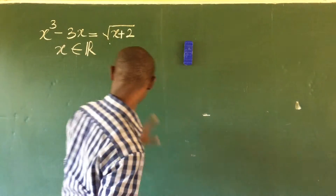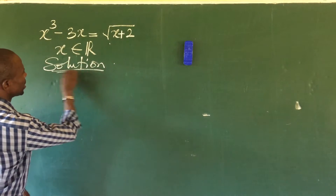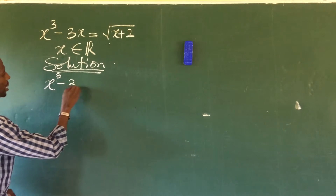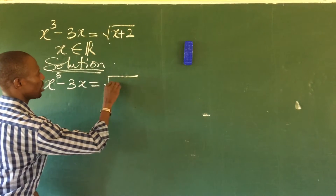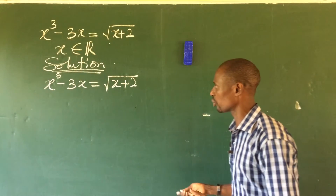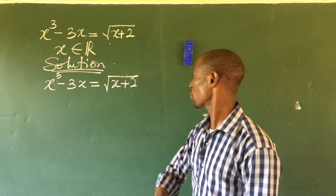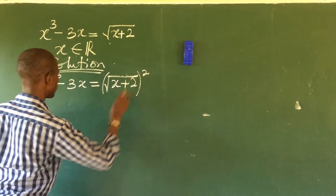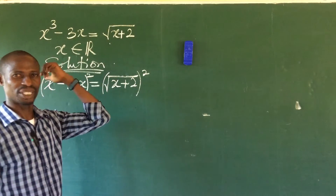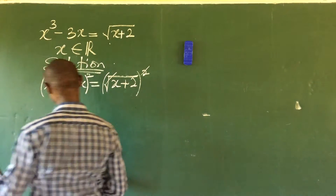Without further delay, let's take our solution down. We have x to the power of three minus three x equal to the square root of x plus two. Using the algebraic method, the first thing we're going to do is eliminate this radical. Since this is a square root, we square both sides of the equation — whatever you do to the right-hand side, you do to the left-hand side. This exposes the expression inside the radical.